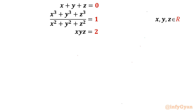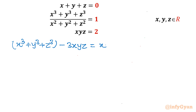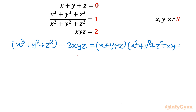Let's get started by writing one algebraic identity: x³ plus y³ plus z³ minus 3xyz equals (x plus y plus z)(x² plus y² plus z² minus xy minus yz minus zx). Now we will apply whatever is given to us. From equation 1, x plus y plus z equal to 0.